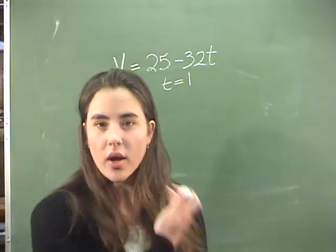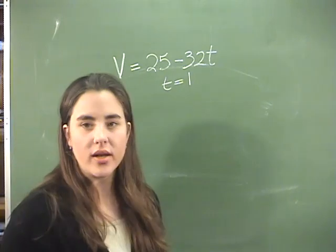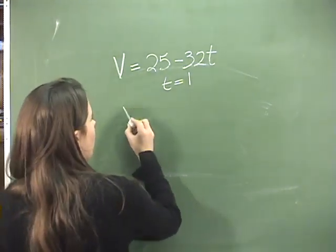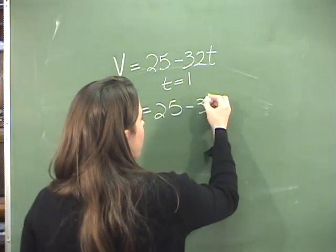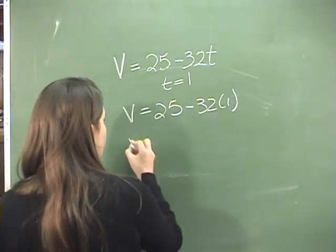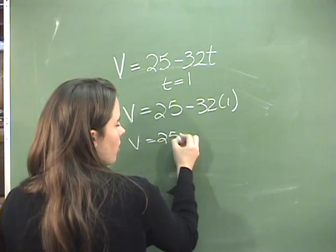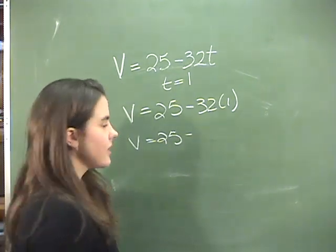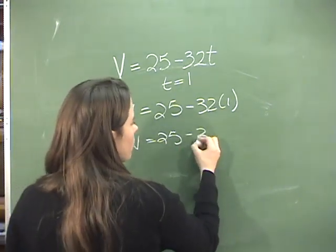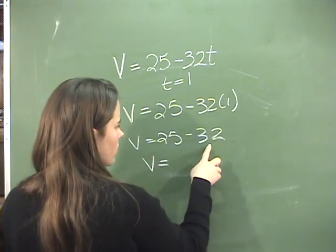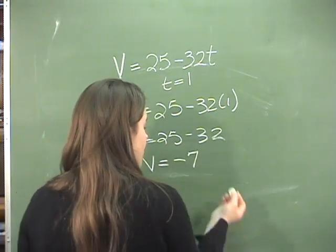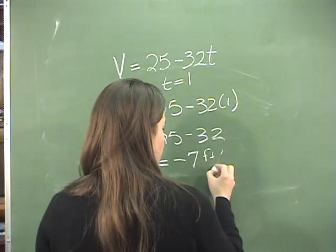What happens after one second? It's been in the air one second. Well, then the ball is moving at 25 minus 32 times 1. Since any number multiplied by 1 equals itself, 32 times 1 will be 32, making the velocity equal to minus 7 feet per second.